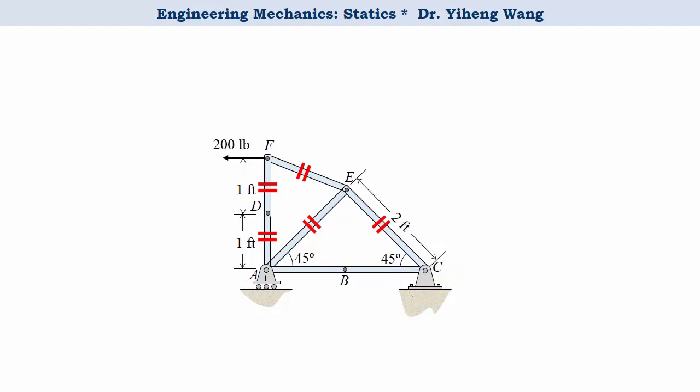So the choice here should be joint A. Since this is a roller and only exerts one support force which is perpendicular to the contacting surface, we can now have overall only two unknowns at joint A and be able to solve for joint A.